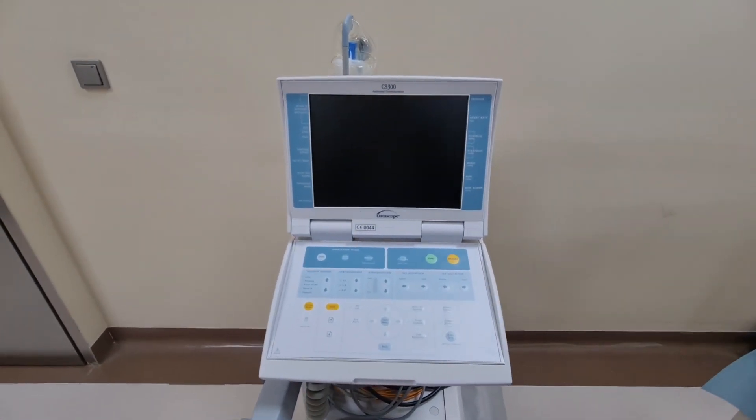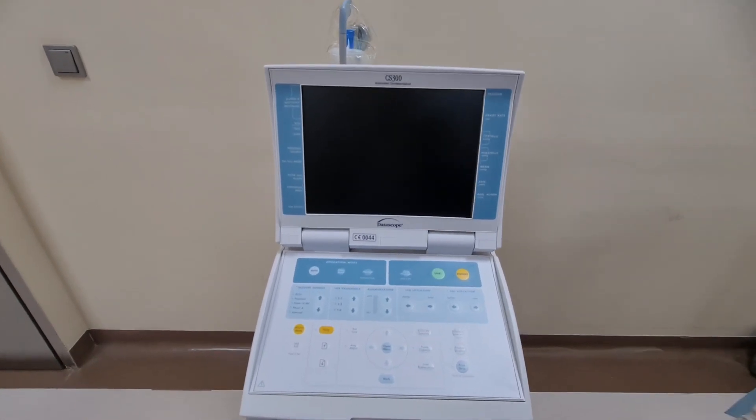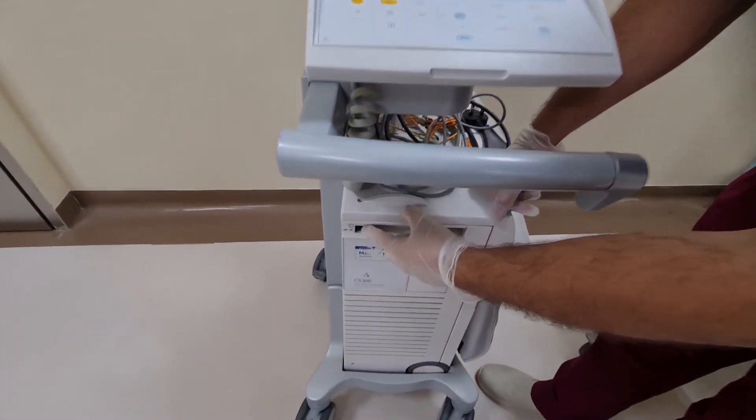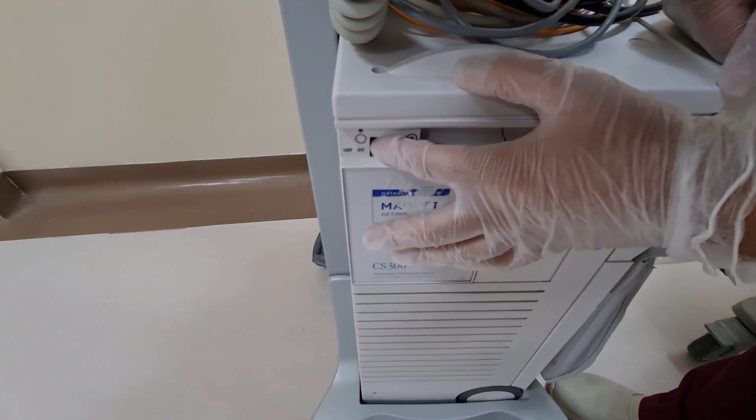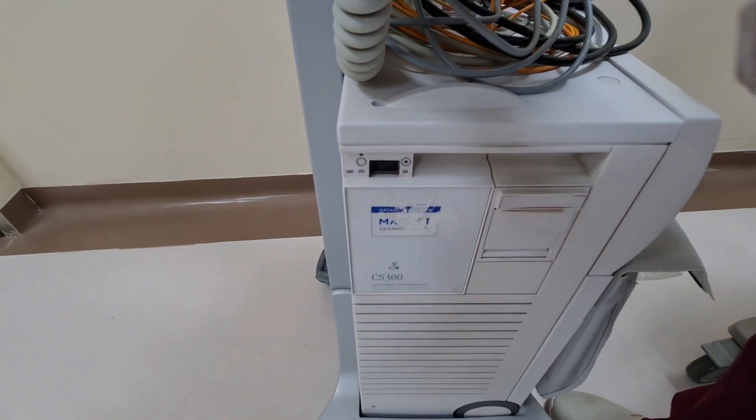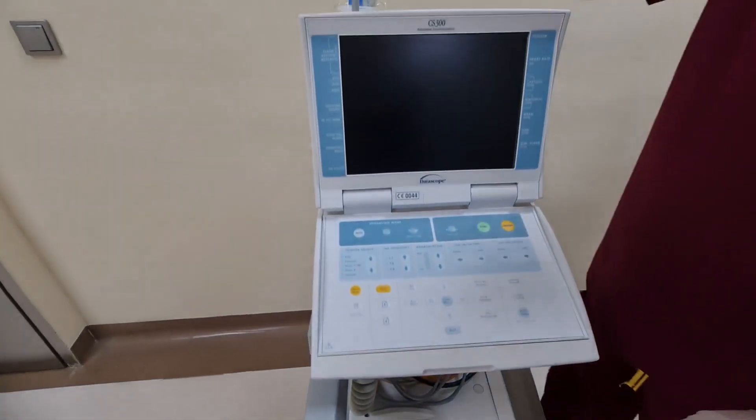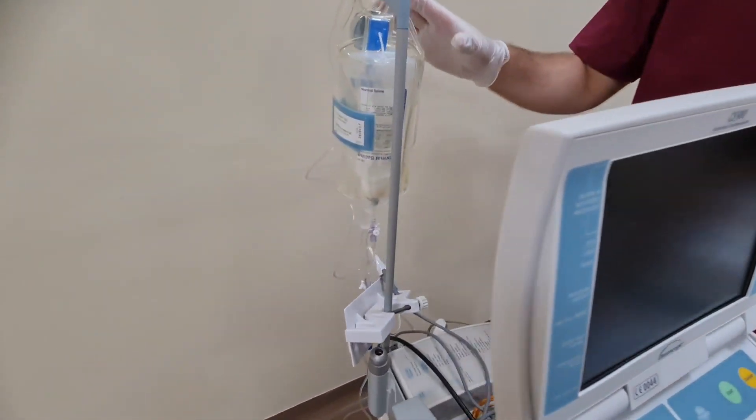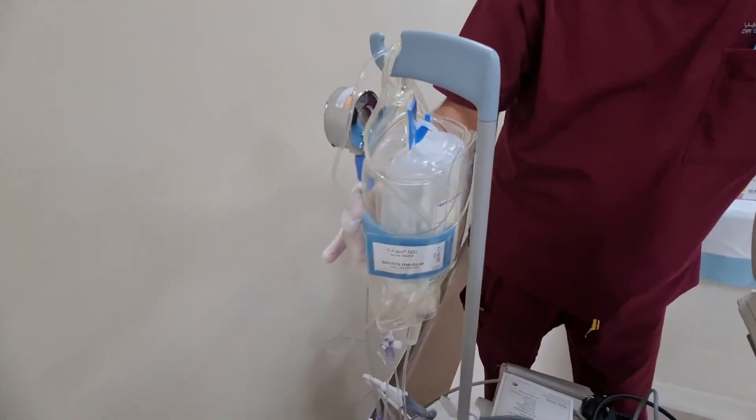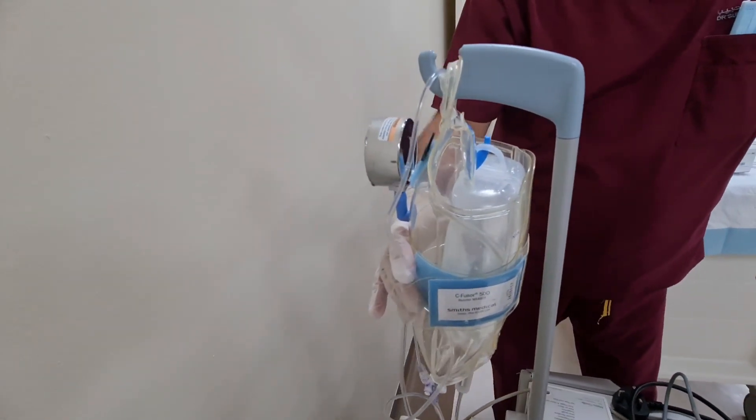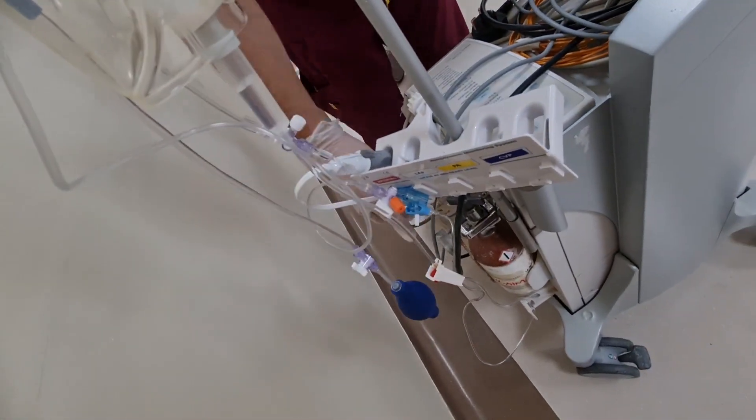In today's video we will talk about how to get it ready for the procedure. First of all, this is the turn on and off button. Turn on the machine from here. Make sure after you turn on the machine, you have the heparinized saline ready as per protocol with the pressure line.